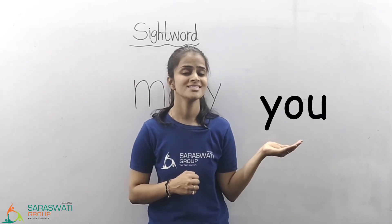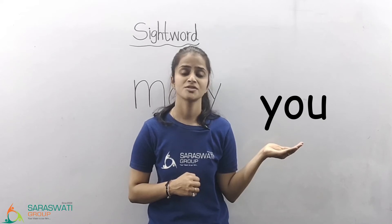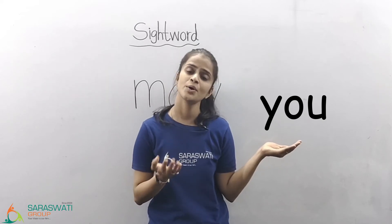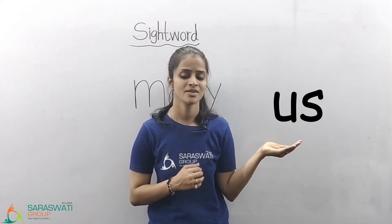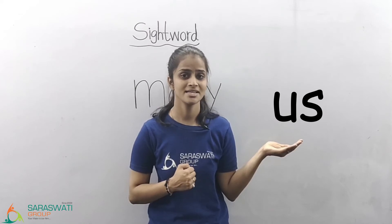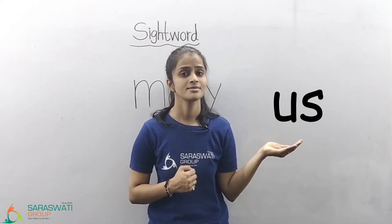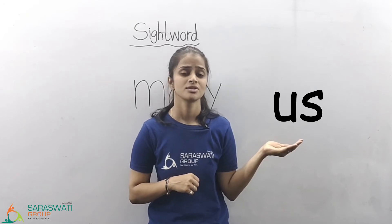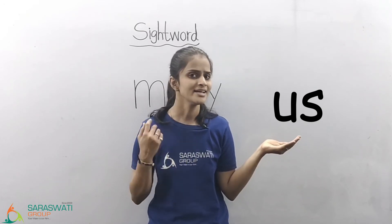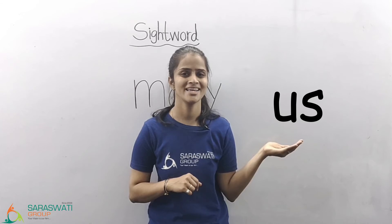Which sight word is this? You. You means Tame. This pen is for you. Apen tamara maate chhe. Which sight word is this? It is 'us'. Us means ame athwa amara. The sentence is: let us go out. Chalo apde baare jaiye.